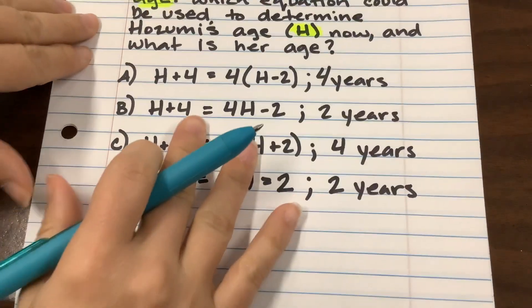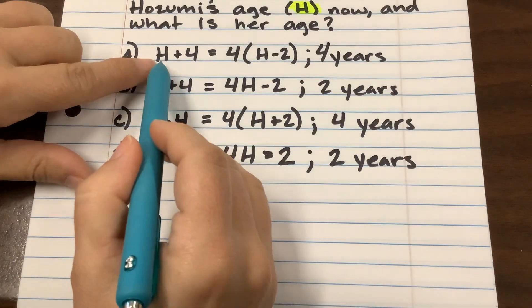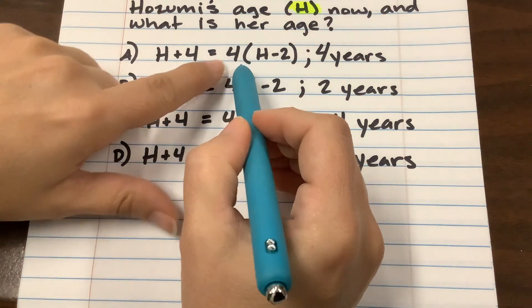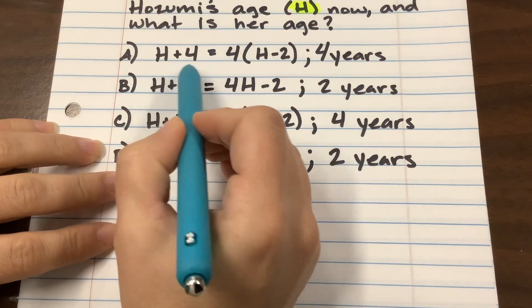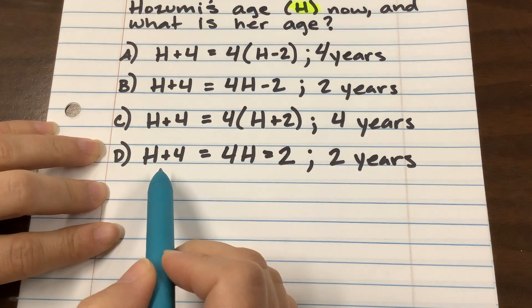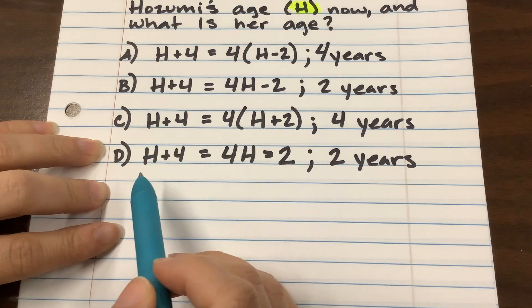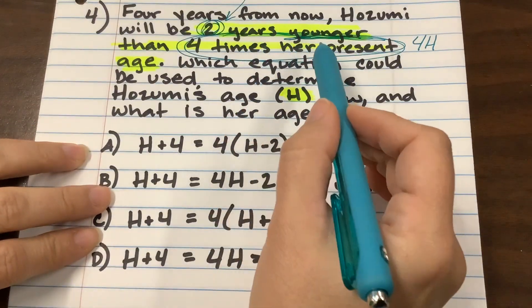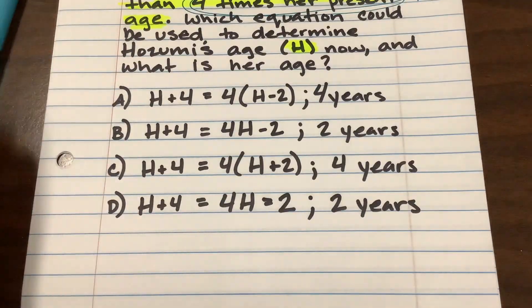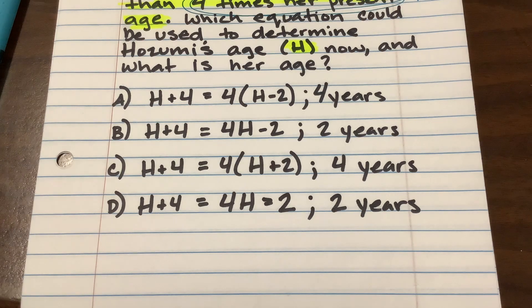So we can eliminate some of our answer choices here. We're saying that in four years, it will be four times her age minus two. So this is okay because all of these are the same. Now looking at answer choices, we just said that we needed to subtract two because it says two years younger. So which ones can we eliminate just by that alone?